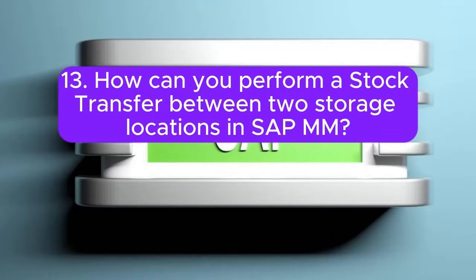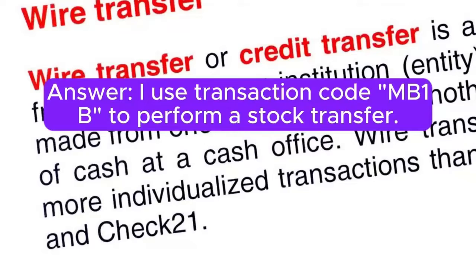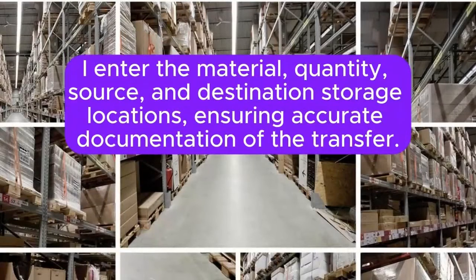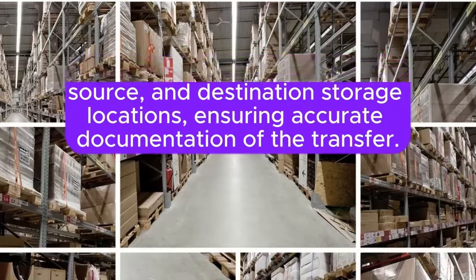Question 13: How can you perform a stock transfer between two storage locations in SAP MM? Answer: I use transaction code MB1B to perform a stock transfer. I enter the material, quantity, source, and destination storage locations, ensuring accurate documentation of the transfer.